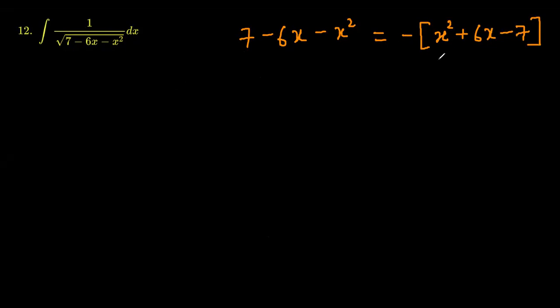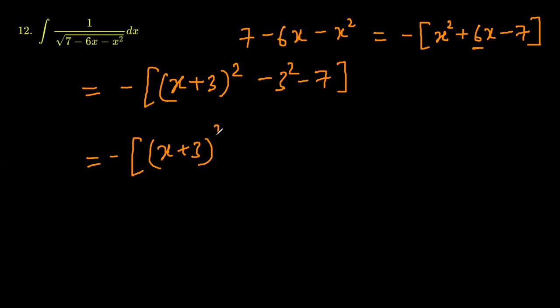So this is the thing inside the square root. Now making it a perfect square is going to look like negative outside, x plus half the coefficient of x, that is x plus 3 whole square. We write it like this and subtract the square of half the coefficient of x and minus 7. It's going to look like negative of x plus 3 whole square minus 3 squared, which is 9, and minus 7. 9 minus 7 is 16, so minus 16.